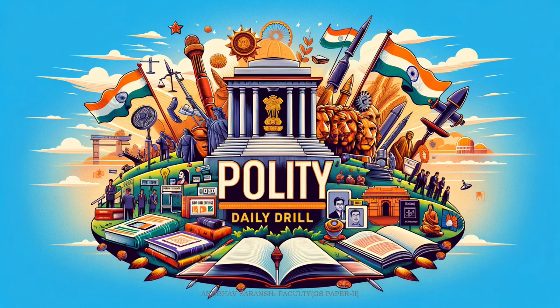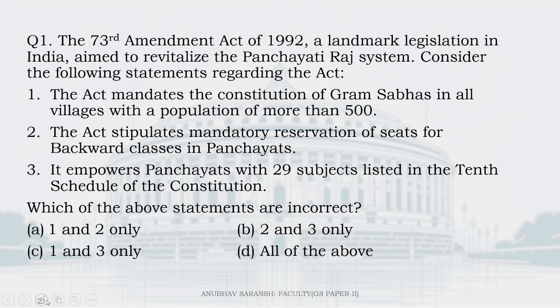Hello everyone. Welcome back to Day 31 of Polity Daily Drill. First question: The 73rd Amendment Act of 1992, a landmark legislation in India, aimed to revitalize the Panchayati Raj system. Consider the following statements regarding the Act.